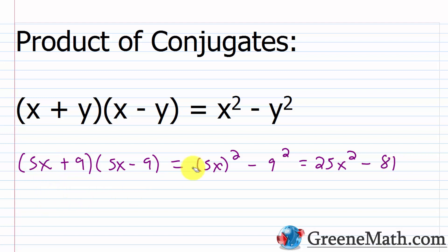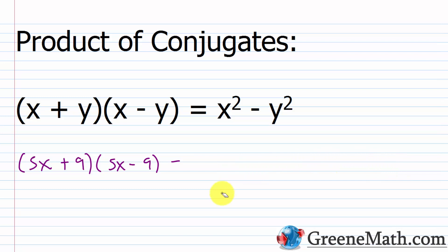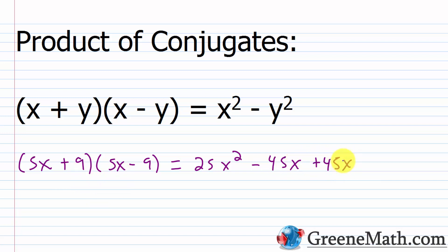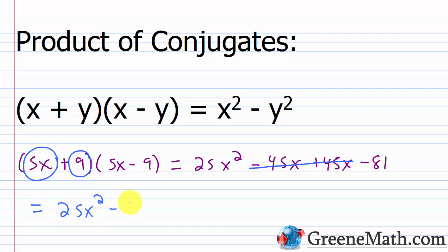We can verify by foiling: 5x times 5x is 25x². Outer: 5x times negative 9 is minus 45x. Inner: 9 times 5x is plus 45x — those cancel. Last: 9 times negative 9 is minus 81. The middle two terms cancel, leaving 25x² minus 81, which confirms our formula: first guy squared minus second guy squared.